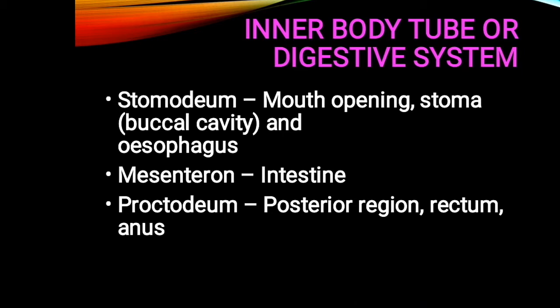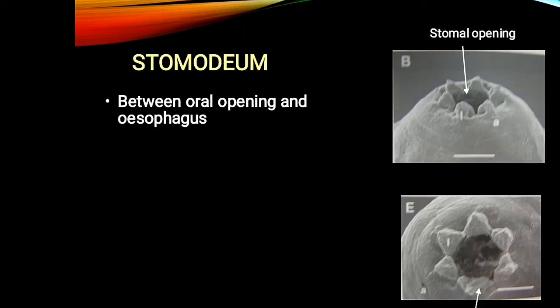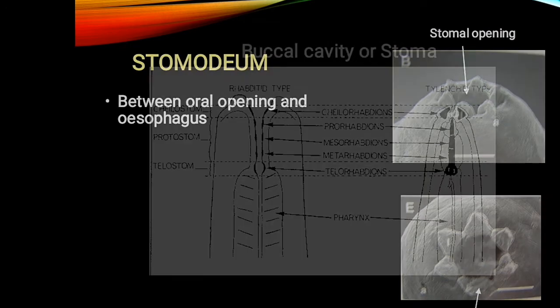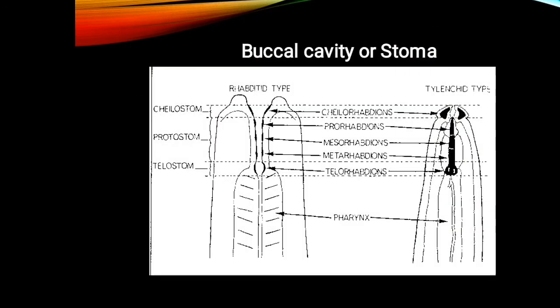The posterior part comprises a posterior region along with the rectum and anus. Next is about the stoma — it is located between the oral opening and the esophagus. The stoma opening is actually small and slit-like, as shown in the diagram. It is surrounded by six lips.